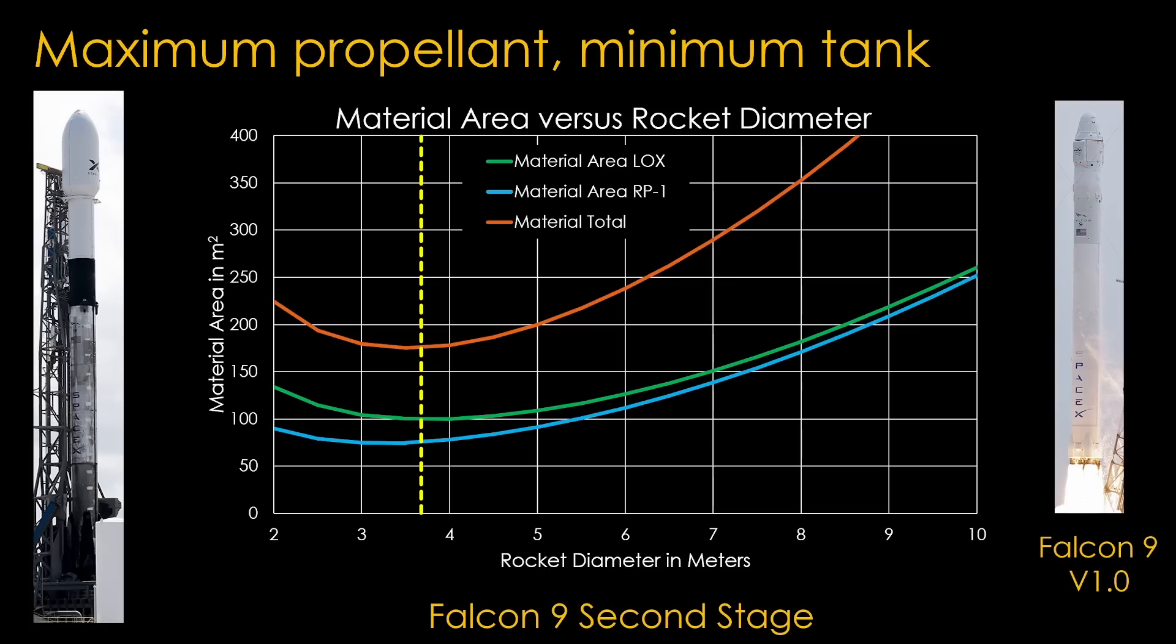My usual explanation for Falcon 9 using a weird propellant combination for the second stage, RP-1 kerosene and liquid oxygen, rather than the far more common liquid hydrogen and liquid oxygen, has been that it was easiest and quickest for them to adapt the Merlin engine to be a vacuum engine. But this shows another reason. You can build a nice, beefy second stage for a 3.7 meter rocket if you use RP-1 as the fuel.